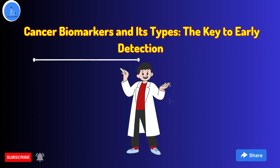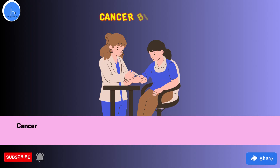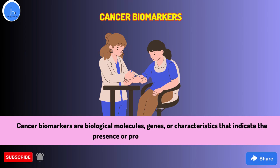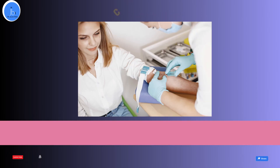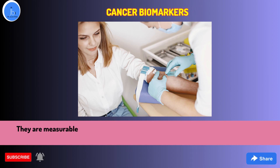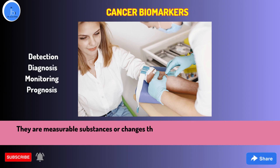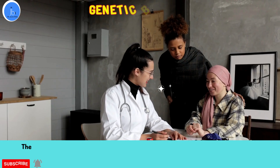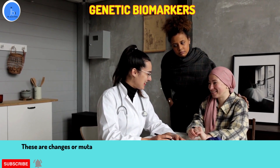As you know, cancer biomarkers are biological molecules, genes, or characteristics that indicate the presence or the progression of cancer. They are usually measurable substances and changes that are associated with the presence of cancer and can be used for the detection, diagnosis, monitoring, and prognosis of cancer. There are several types of cancer biomarkers, including genetic biomarkers.